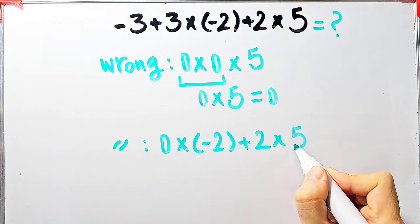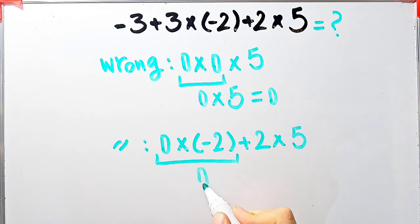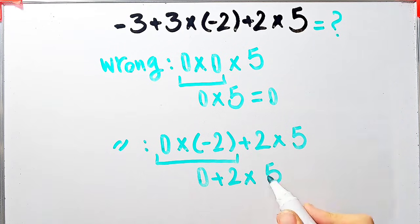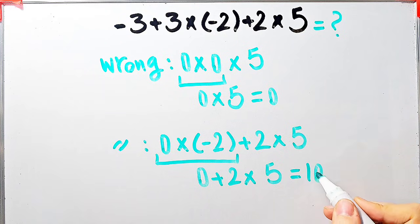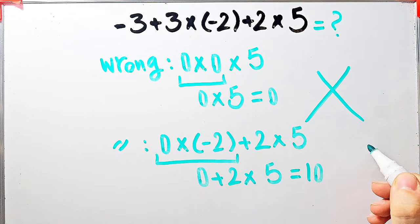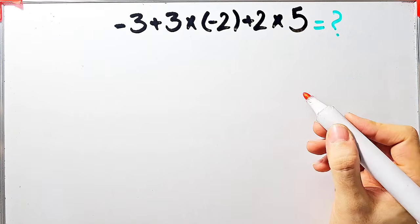Again starting from the left: 0 times negative 2 equals 0, then 0 plus 2 equals 2, and 2 times 5 equals 10. They say the final answer equals 10 — but this answer is definitely wrong.